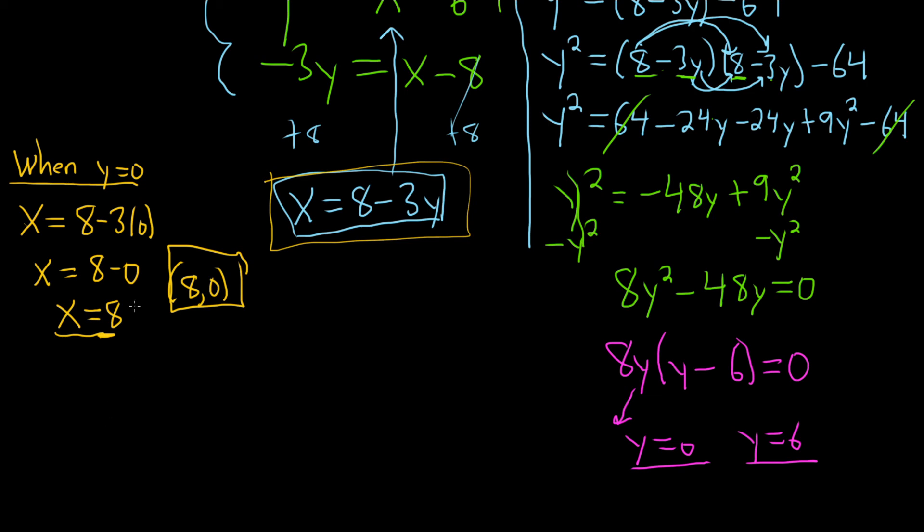And the last one is when y is 6. So when y is equal to 6, same thing. Just plug it in here. So x equals 8 minus 3 times 6. So x equals 8 minus 3 times 6 is 18. So you get x equals negative 10. So when x is negative 10, y is equal to 6.